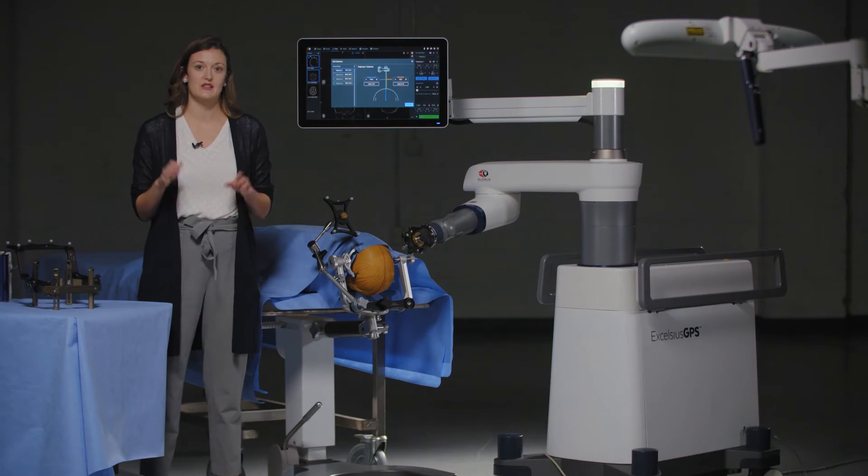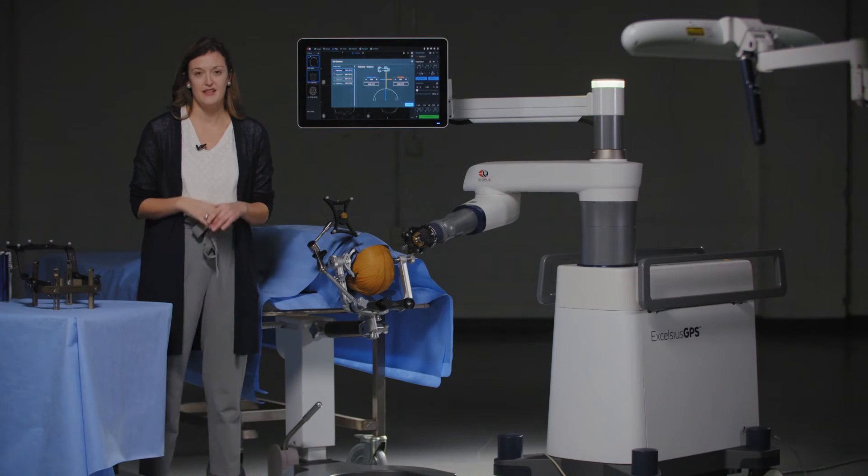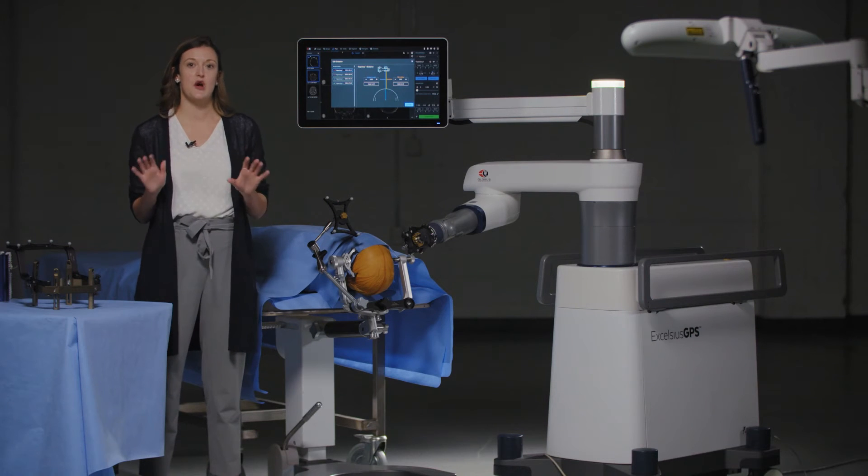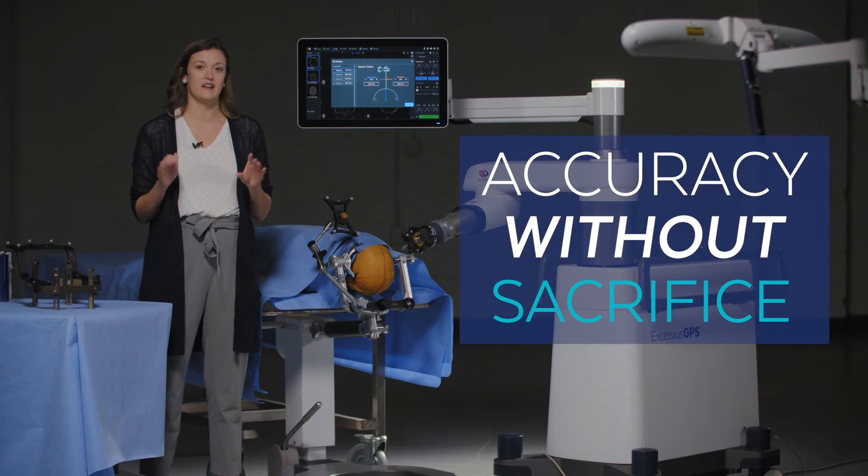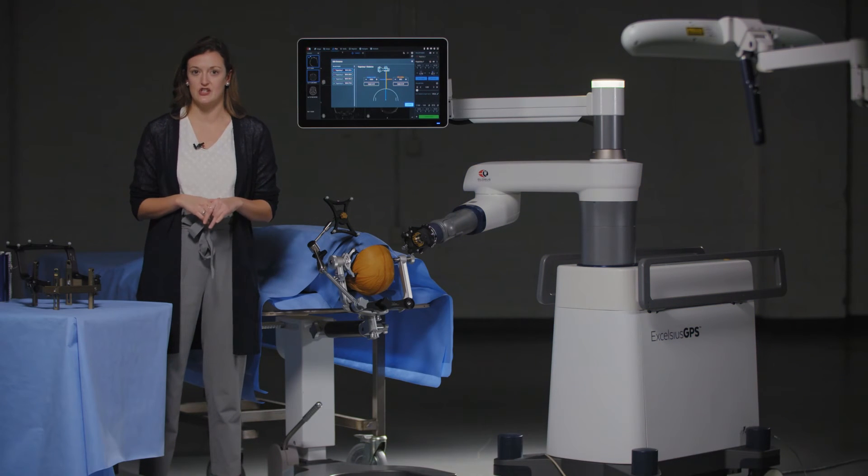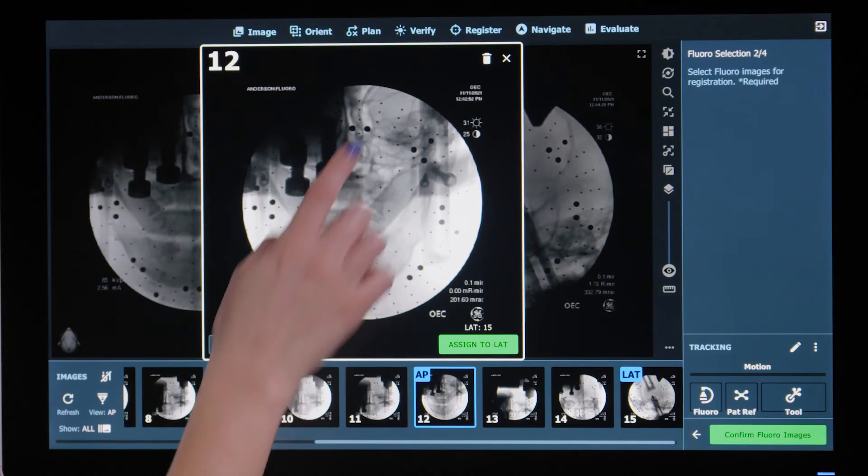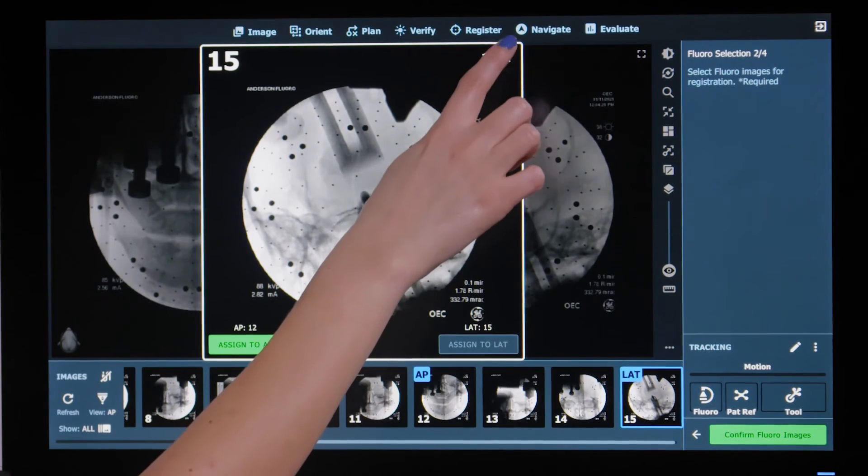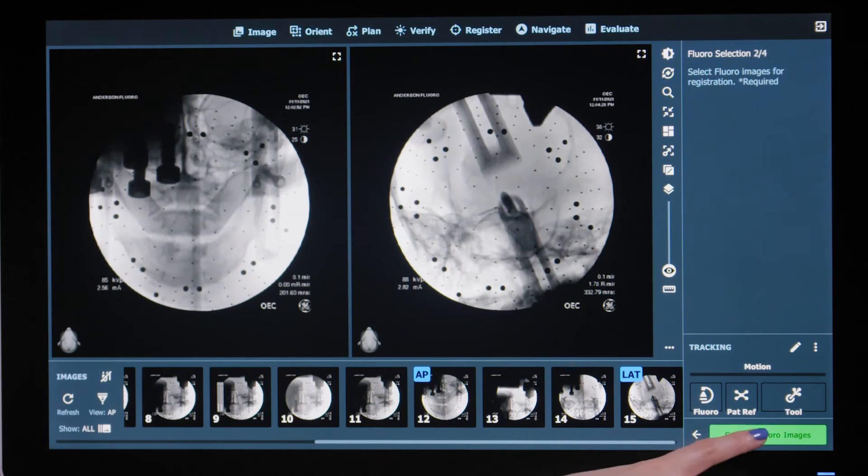Excelsius GPS Cranial Solutions has two registration methods available: intraoperative CT registration and our unique CT fluoroscopy registration. The CT fluoroscopy registration workflow is the first fluoro-based registration workflow for cranial applications on the market. It offers a simplified patient registration option that only requires two fluoroscopy images. It is designed to decrease your registration time while minimizing radiation exposure and maintaining your accuracy.